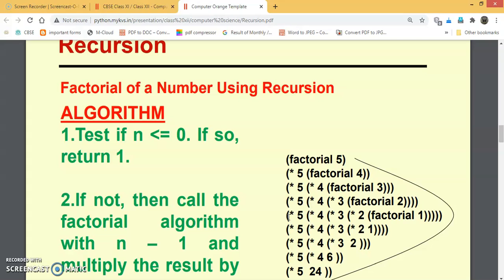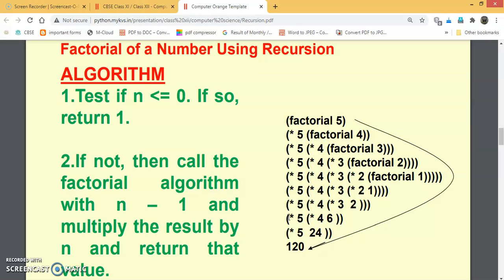Okay, so if we take an example of recursion - factorial of a number using recursion. We have already done the factorial of a number using loop. We have done such examples in 11th and 12th that we have used loop to find factorial. If n is less than or equal to zero, return 1. The algorithm is that if n value is zero or less, return 1.